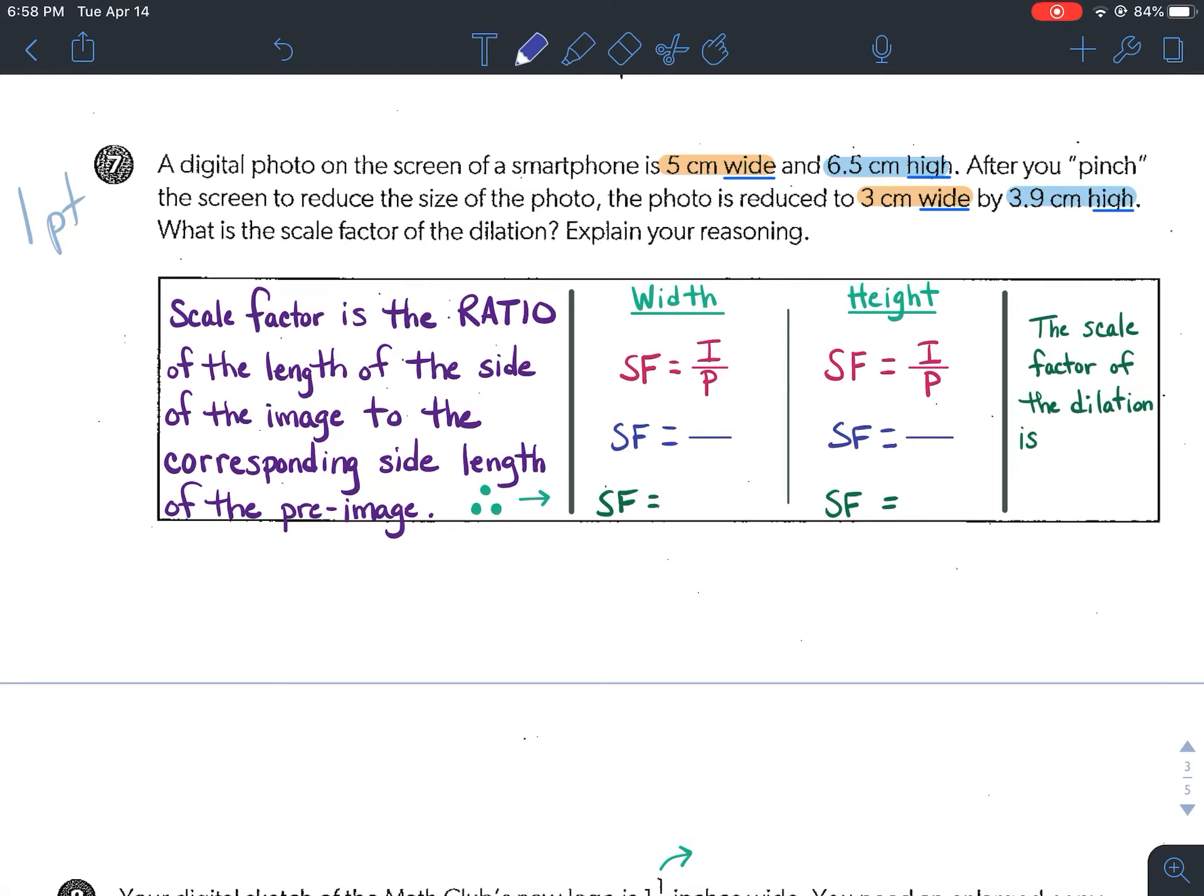So if we look at our original problem, I know that 5 centimeters wide has to deal with my pre-image and the 6.5 is also my pre-image because that was the original photo on the smartphone. Now, the 3 centimeters and the 3.9 centimeters, that was after we pinched it. So that's after we reduce it to get our image.